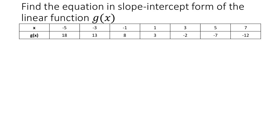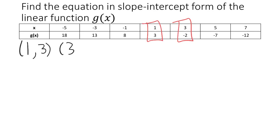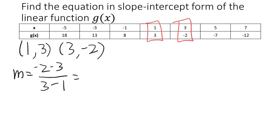This example again asks us to find the slope-intercept form of a linear function. But instead of being given a graph, this time we're given a table. The process is going to be the same — we can find two points and then use the point-slope form as a stepping stone to get to the slope-intercept form. It doesn't matter which two points we pick, so I'm going to pick two points: 1 comma 3 and 3 comma negative 2. Using the slope formula, negative 2 minus 3 is negative 5, and 3 minus 1 is 2, so the slope is negative 5 over 2.